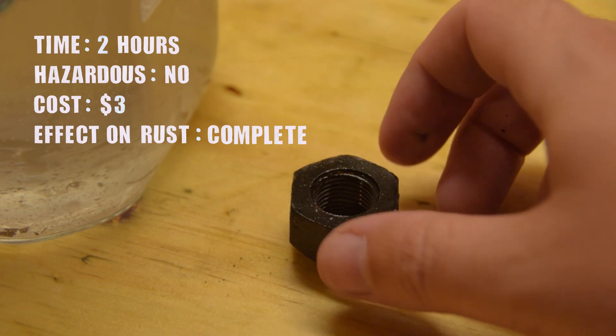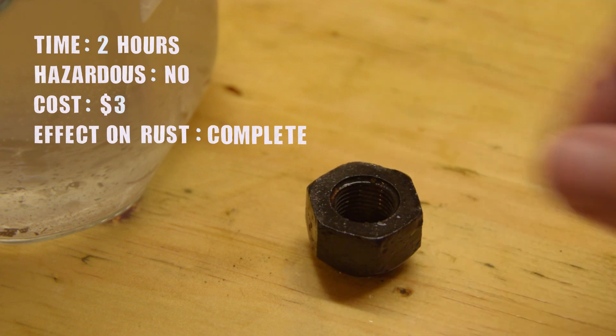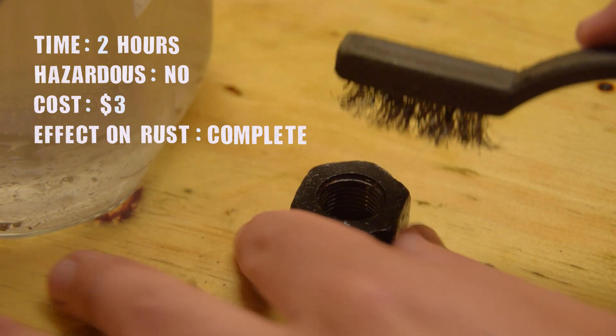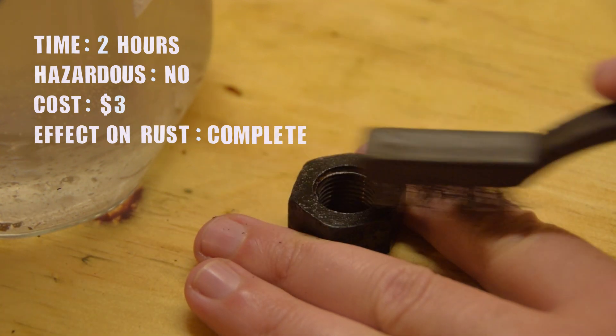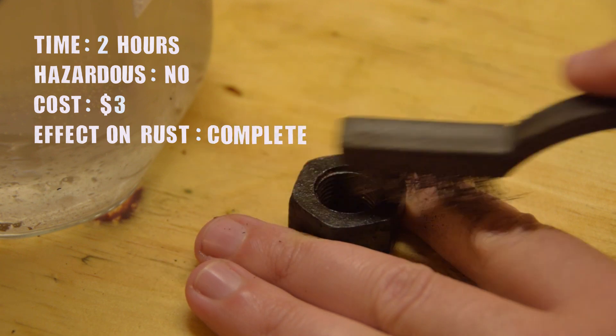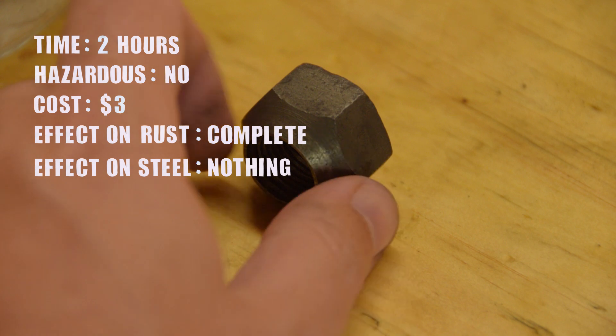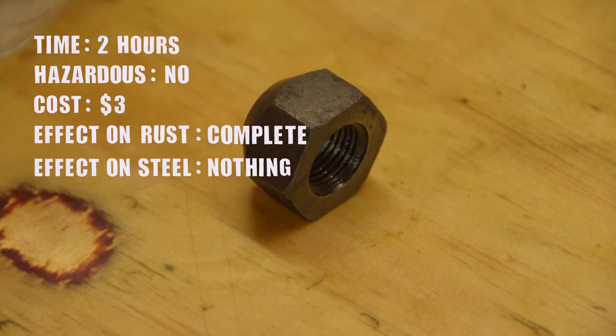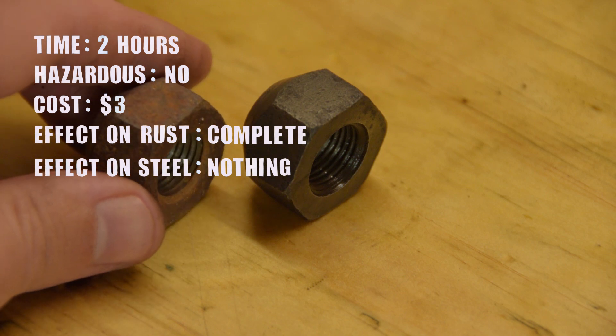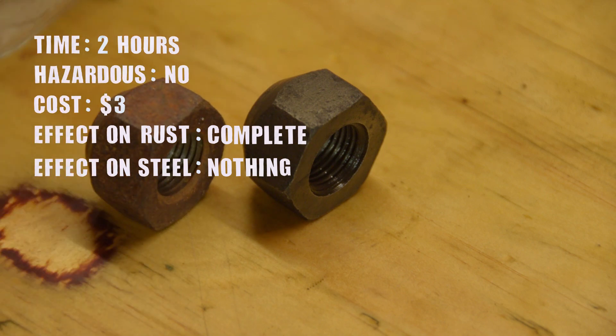The biggest downside of this method, the part is covered in black gunk afterwards. That you will need to remove with a wire brush. Electrolysis will not harm your steel part at all. For small parts, electrolysis is my preferred method of rust removal. Sometimes an acid is more convenient, and evaporust works just as well if you can afford it.